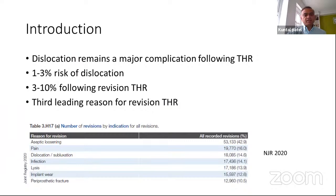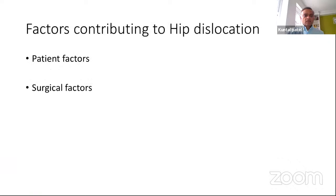Hip dislocation remains a problem following total hip replacement. For primary hip replacement, the risks are around 1 to 3 percent, whereas for revision hip surgery it goes as high as an average of 3 to 10 percent. Looking at the NJR data from UK, it is the third commonest cause for revision hip surgery.